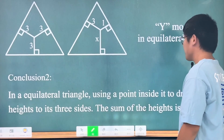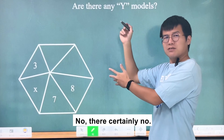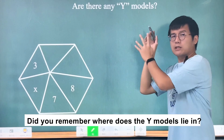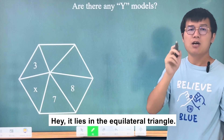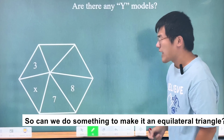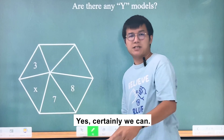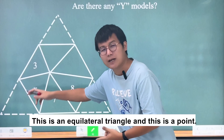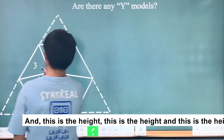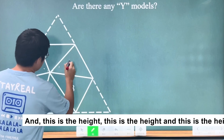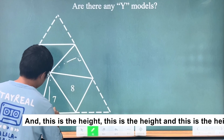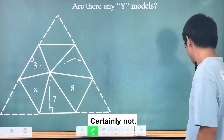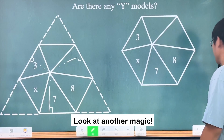Now let's go back to the original question. Are there any Y models? No — because Y models appear in equilateral triangles. So can we do something to make part of the hexagon into an equilateral triangle? Yes, certainly! Here's a trick: we can draw an equilateral triangle this way, with the interior point and its three heights. And there's another way.